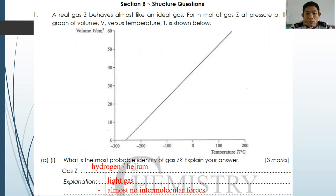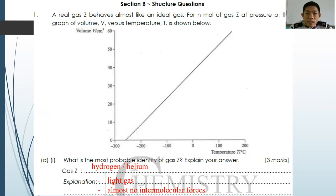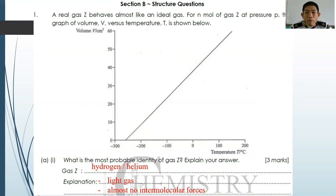Question number two: you are required to mark on the graph the variation in volume at a lower pressure P₀. This is a graph of volume against temperature. When you have a lower pressure, Boyle's law applies — volume of a gas is inversely proportional to pressure. So if you have a lower pressure, you expect a greater volume, and the graph line representing lower pressure P is positioned above the original line.